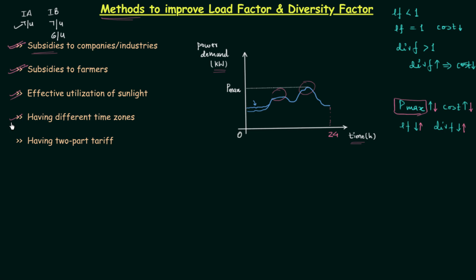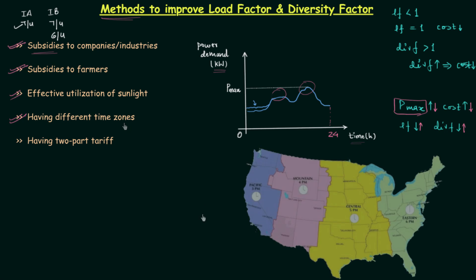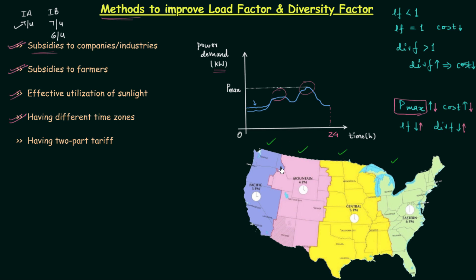The fourth method is to have different time zones, and this is a very important point. In India we have the same time across the entire country — Calcutta and Bombay have the same time. But in America there are four different time zones. You can see the map of USA on your screen — it has four different sections representing four time zones.